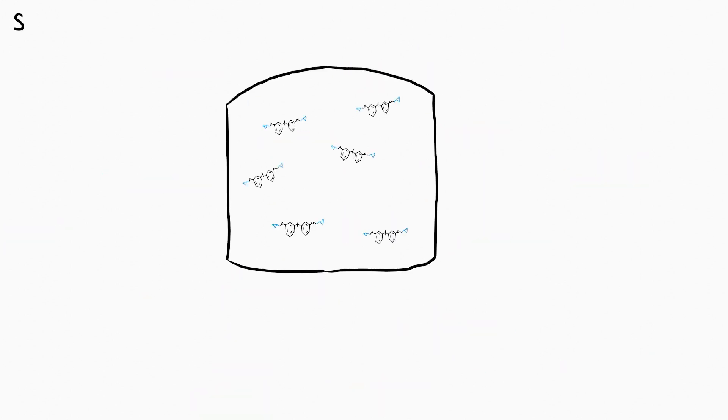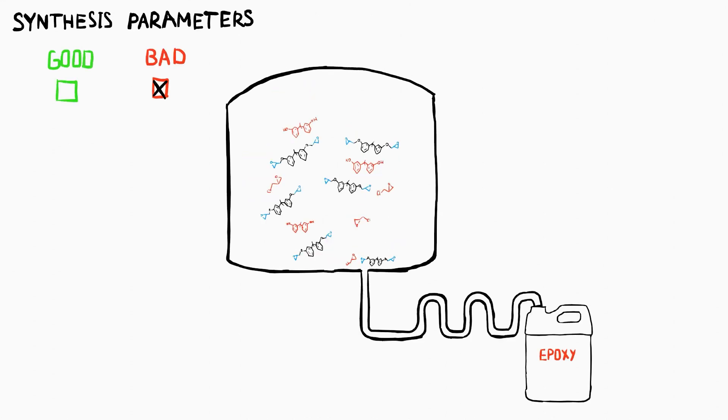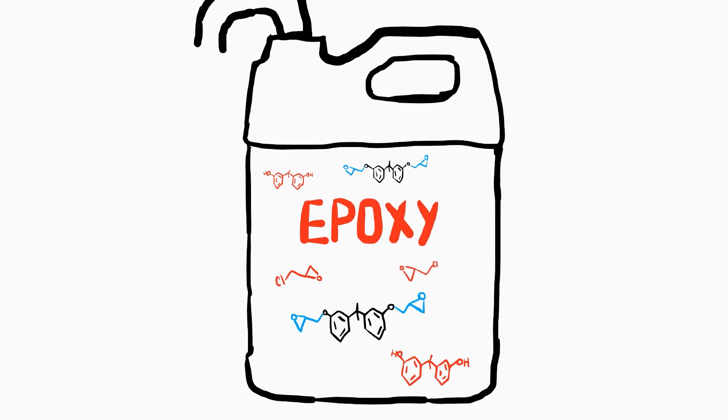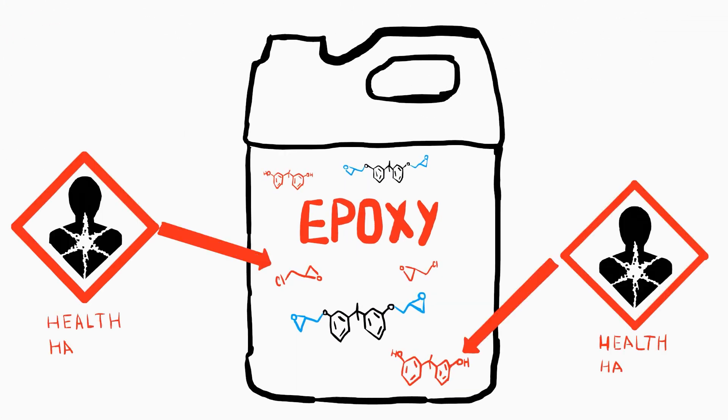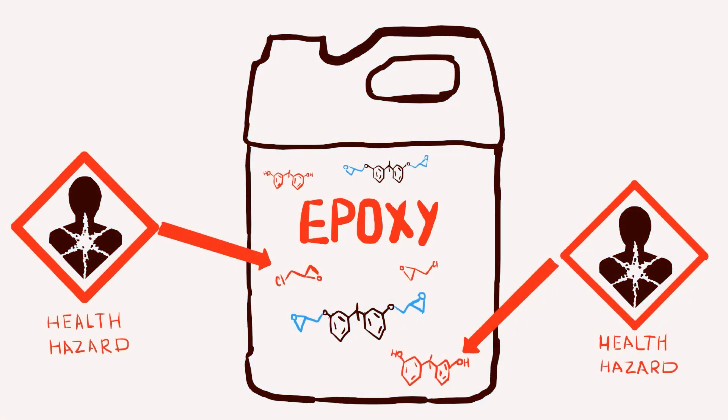However, some manufacturers use cost-reduction techniques where the technological processes might be affected. This can cause the chemical reaction to be incomplete, and some of the BPA or EP chlorohydrin going into the jug of the epoxy unreacted, causing unnecessary health hazard.